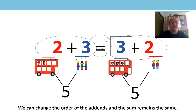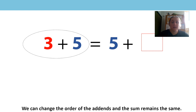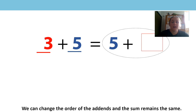Remember, we can change the order of the addends but the sum remains the same. Here is another equation: three add five is equal to five add a missing addend. What do you notice about this equation? Pause the video to have a think or discuss with an adult if you can. On the first side of the equals sign, three comes first and five comes second. But on the second side, five comes first and the missing addend comes second.